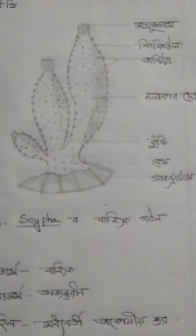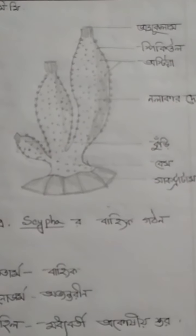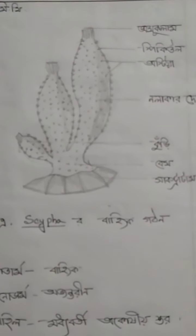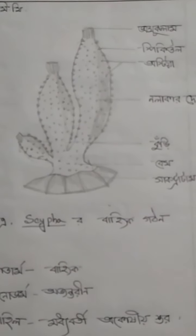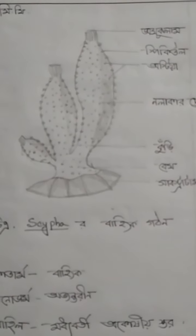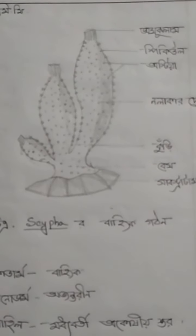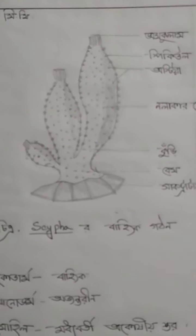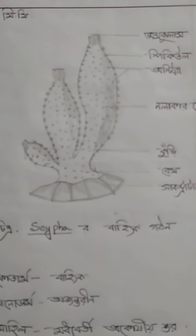Today we will study Animal Diversity. This is Peripheral Pover Scypha — if you look at this, we will see the intermediate classification.